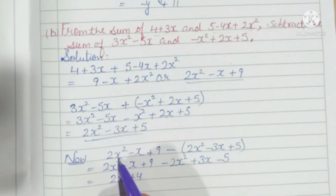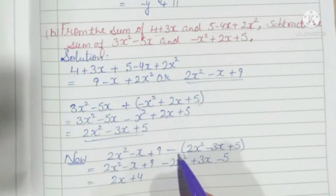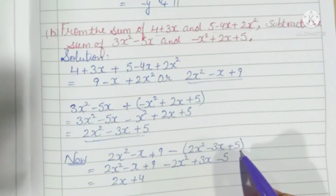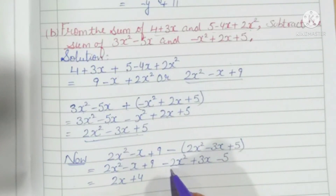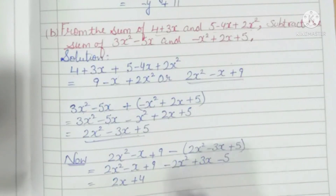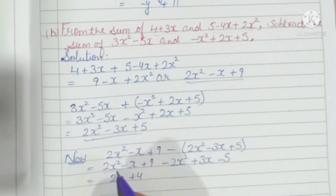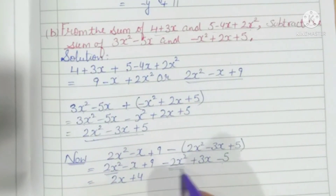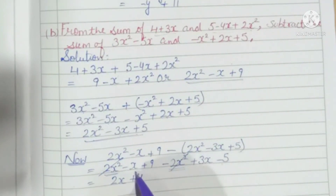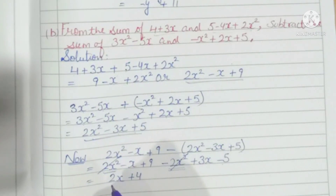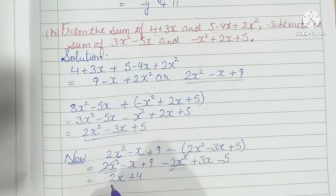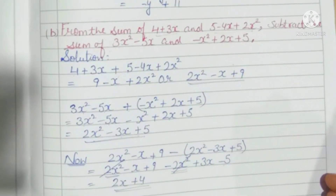So: 2x² minus x plus 9 minus (2x² minus 3x plus 5). Open the bracket and change signs: minus 2x² plus 3x minus 5. Now simplify: 2x² and minus 2x² cancel; minus x plus 3x is 2x; 9 minus 5 is 4. So the solution is 2x plus 4. This is the solution of question number 6.